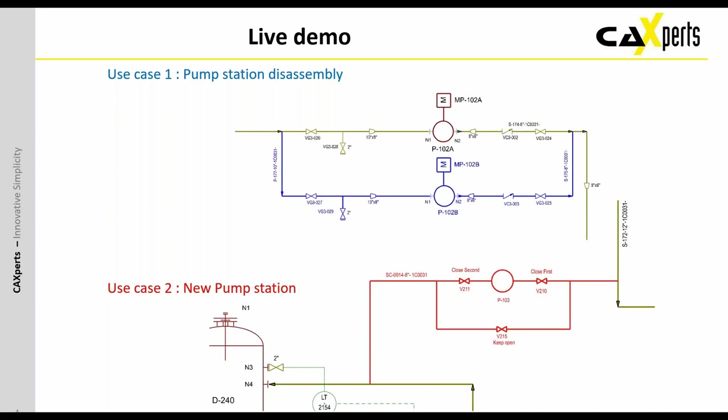The second use case will be about placing in the same PID a new pump station. In the new pump station, of course, the new pump will show, but also some additional valves, pipelines, and instruments. What is new in this release is that it is also possible to place labels on these sketch components. The labels contain attributes which can be modified and which can also be used in reports.